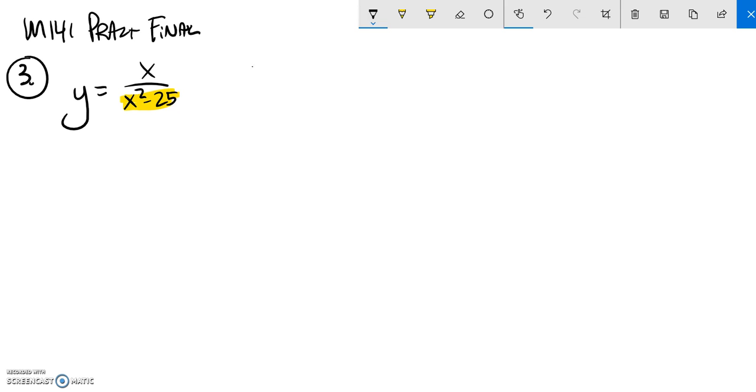I know that x squared minus 25 factors into x plus 5 times x minus 5, so those are going to be some asymptotes. I know that x cannot be 5, nor can it be negative 5.